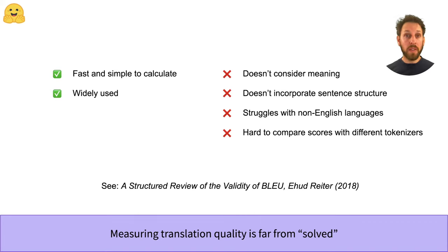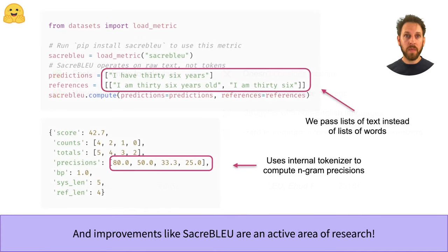Another problem with BLEU is that it assumes that the human translations have already been tokenized, and this makes it hard to compare models that use different tokenizers. So as we've seen, measuring the quality of text is still a difficult and open problem in NLP research. For machine translation, the current recommendation is to use the SacreBLEU metric, which addresses the tokenization limitations of BLEU. As you can see in this example, computing the SacreBLEU score is almost identical to the BLEU one — the main difference is that we now pass a list of texts instead of a list of words to the translations, and SacreBLEU takes care of the tokenization under the hood.